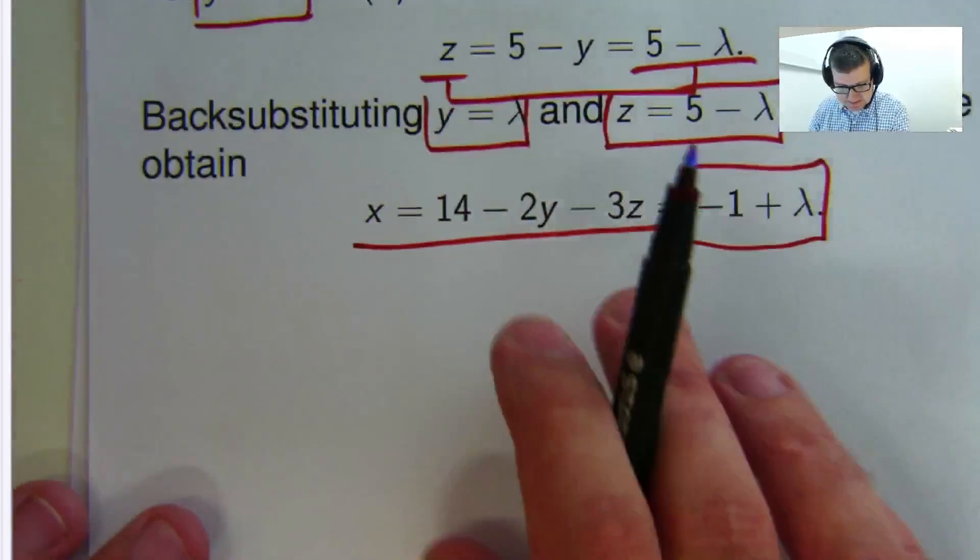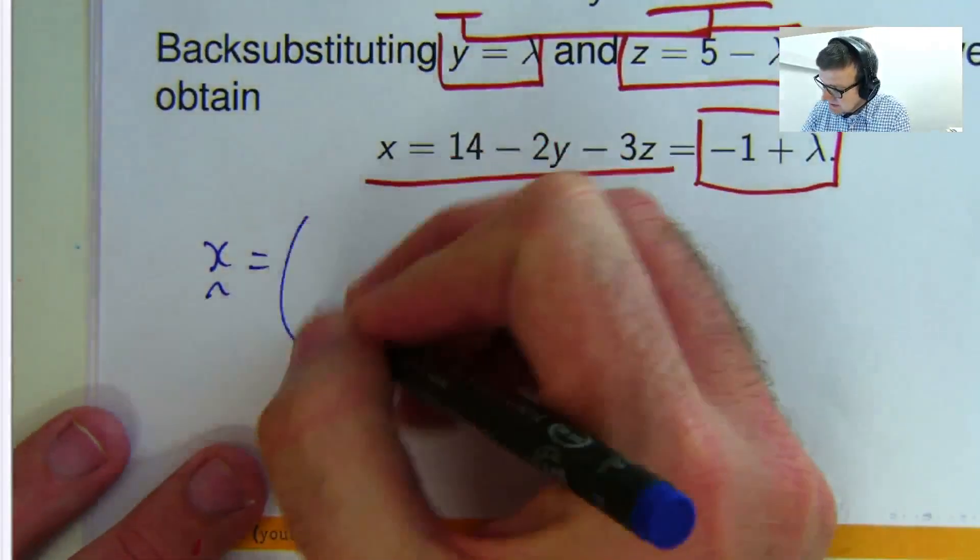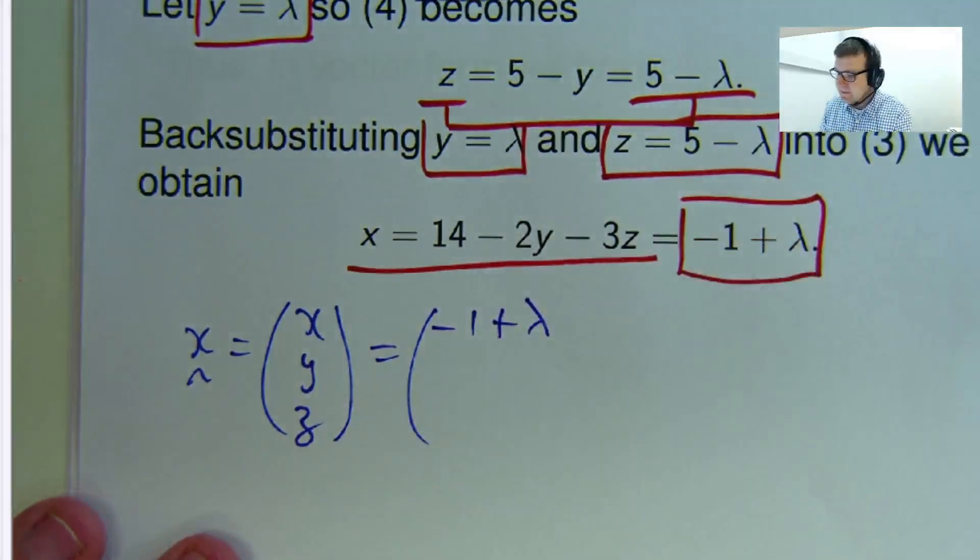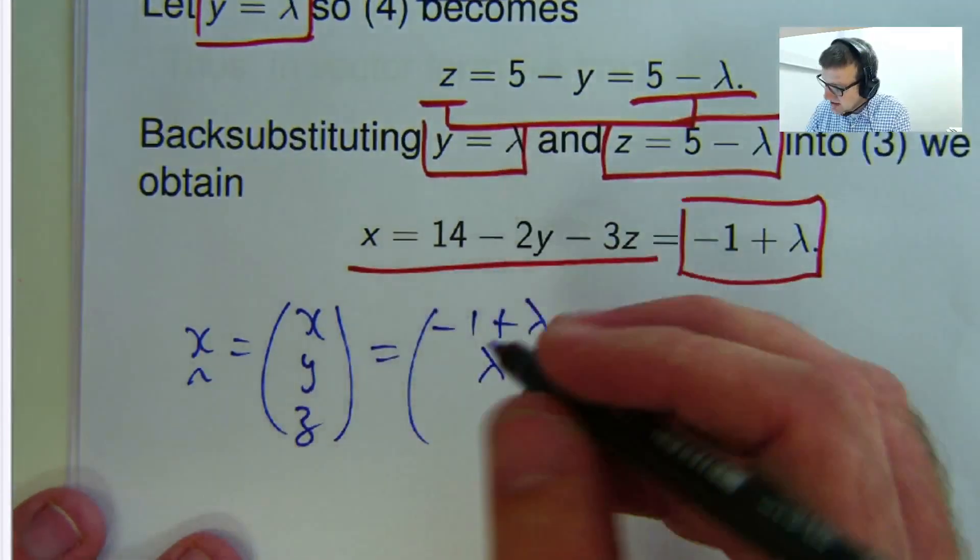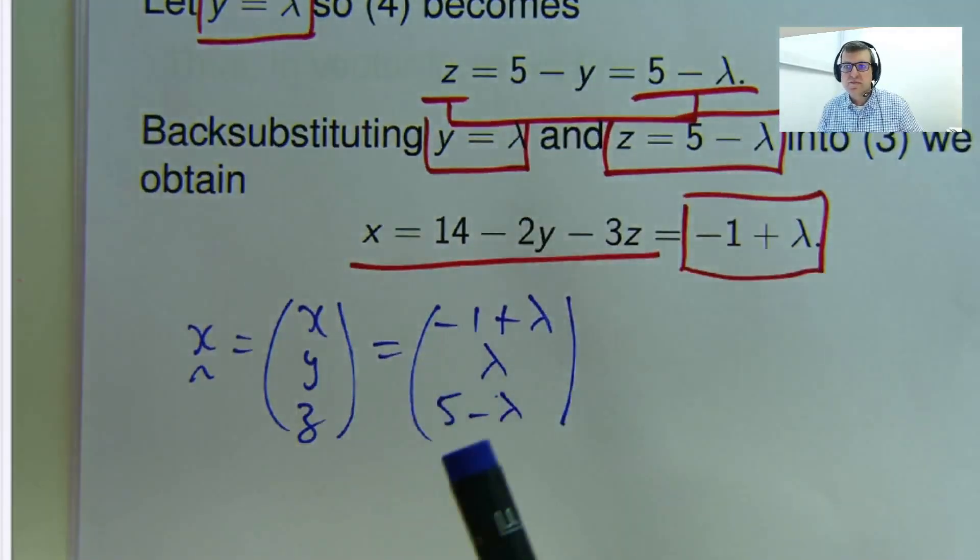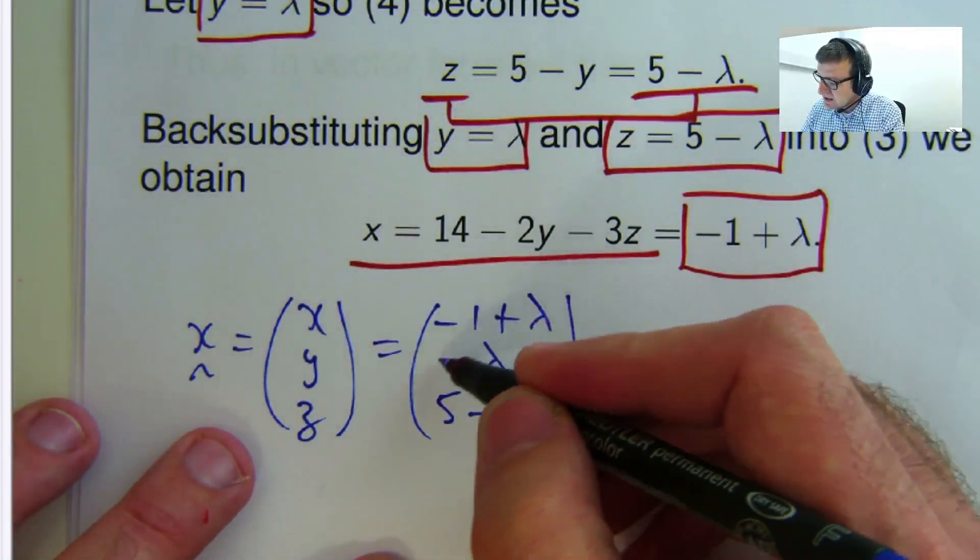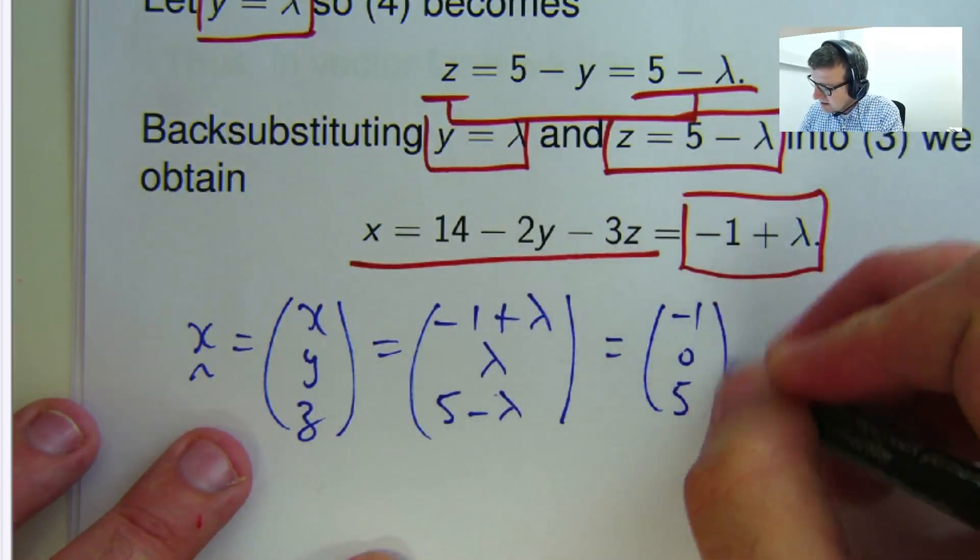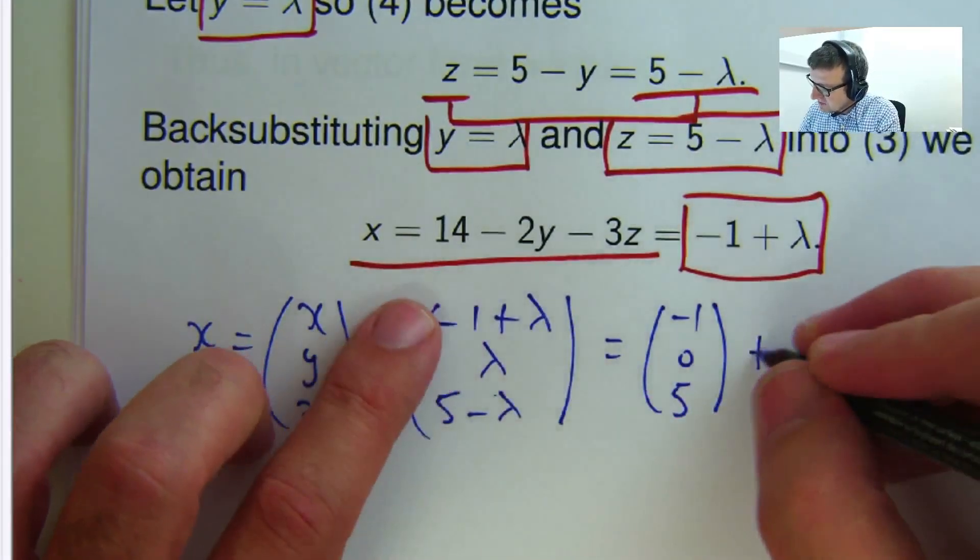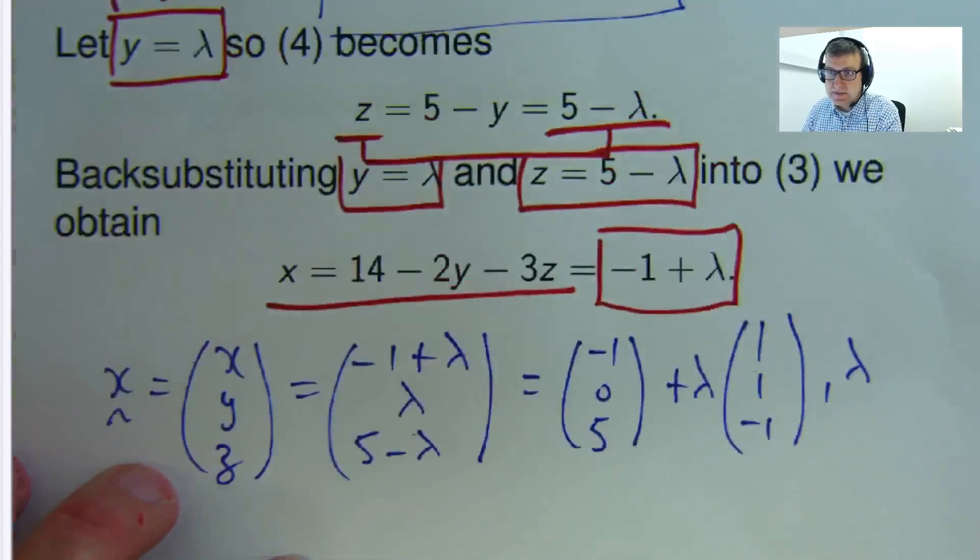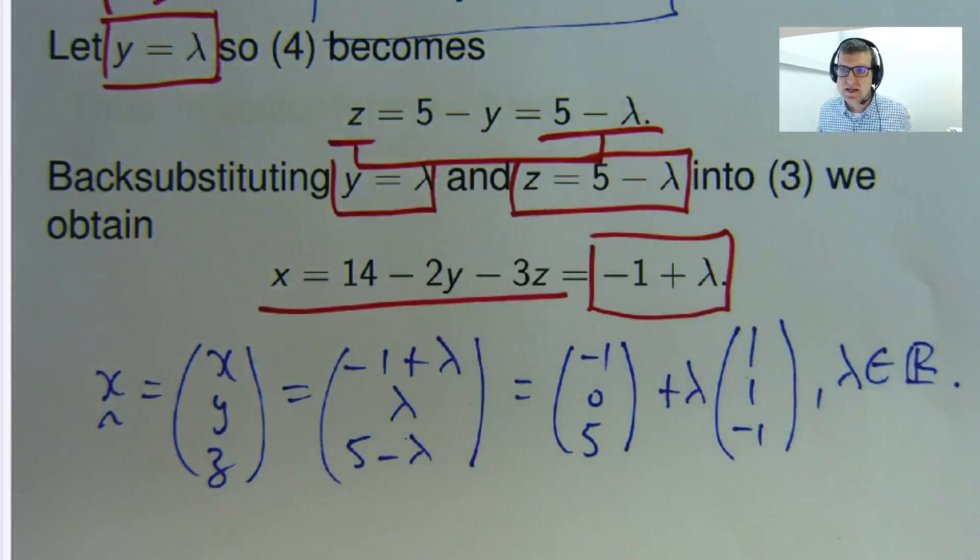So what have we got? Well, if I let the vector x be x, y, z, then that's just writing out this, it's negative 1 plus lambda, y is the parameter lambda, and z is 5 minus lambda. Now what I can do is break up this vector into bits that gives us the geometric properties of what turns out to be a line of intersection. So what I'm going to do, this is I'm going to bring out the numbers, so negative 1, 0, and 5. And in the second bit, I've got lambda, lambda, negative lambda, so there's a common factor of lambda, and I'm left with 1, 1, and negative 1. And this is a line, so lambda is between negative infinity and positive infinity.